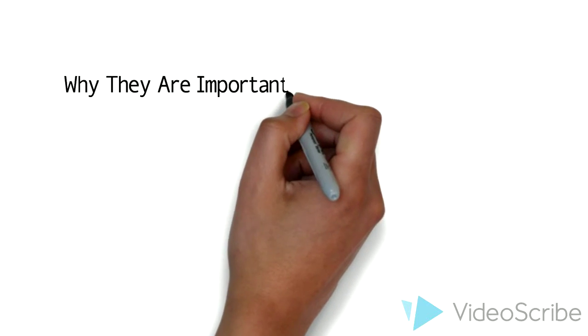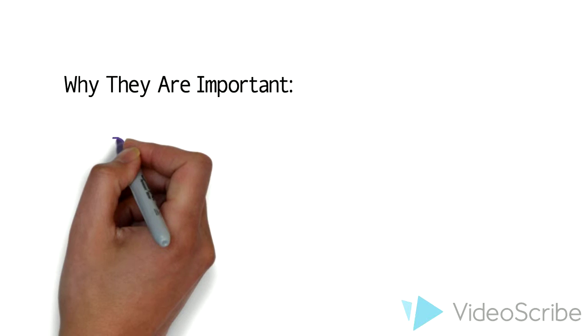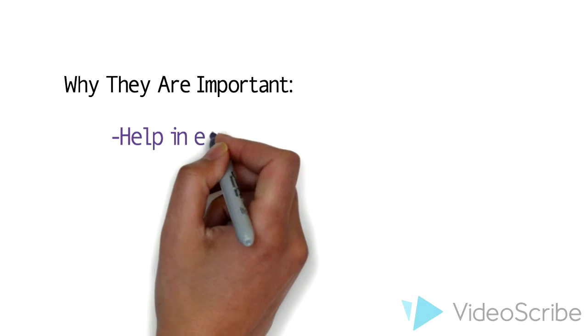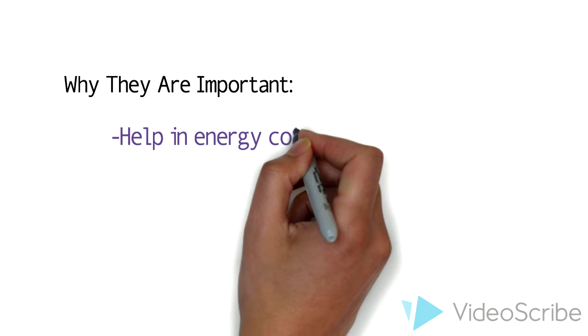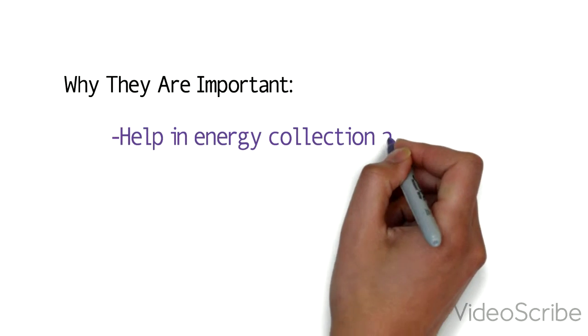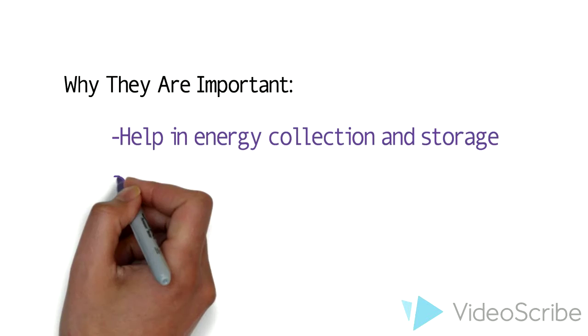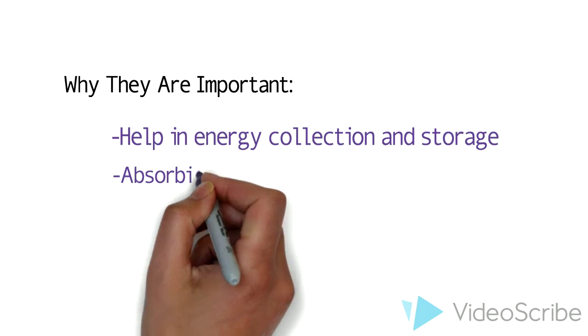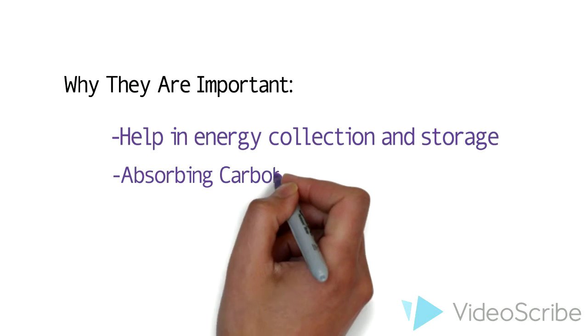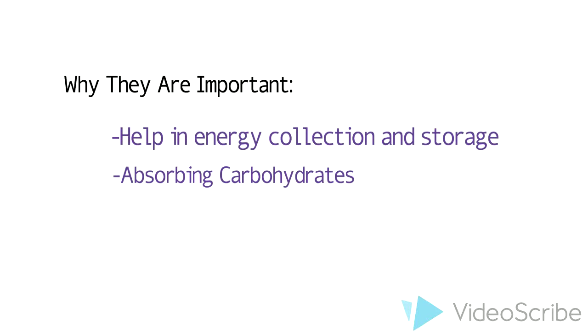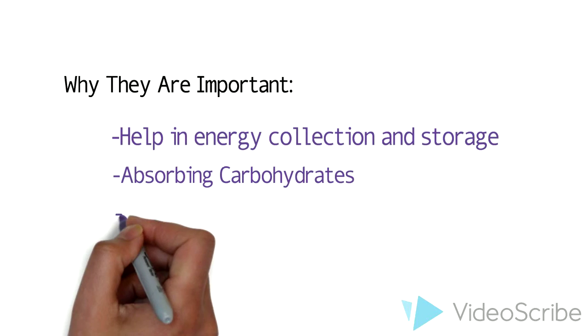Eating and digesting would not be possible without them and that means that we would be unable to grow or develop properly either. These microbiota are so crucial to our functioning because they are a part of not only energy collection and storage, but also absorbing carbohydrates. This absorption of carbs is what is believed to be what established the beginning of a symbiosis between intestines and the bacteria.